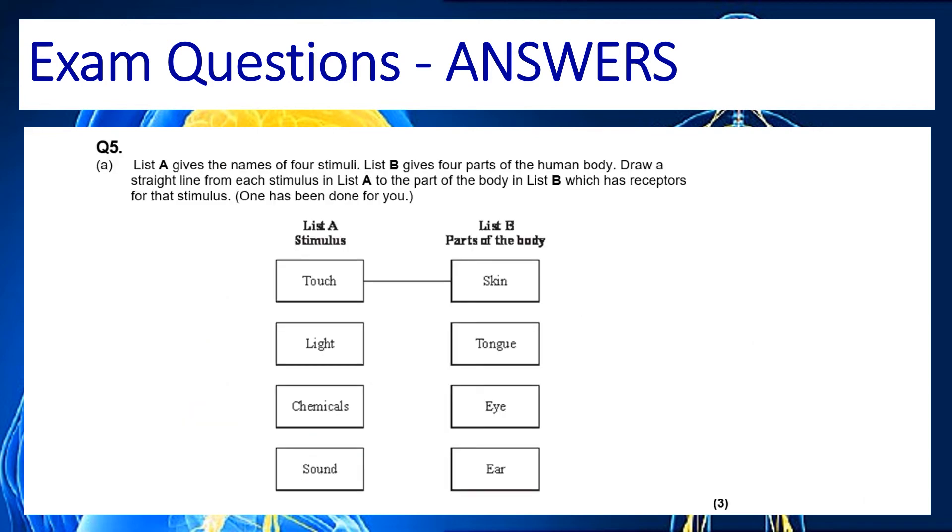Nice easy question this one we're just linking up the stimulus with the part of the body so we know that light will go with eye we know that sound will go with ear and we know that chemicals will go with tongue. If you're not sure about chemicals we do definitely know the answer to light and sound so we can put the chemical answer in last.